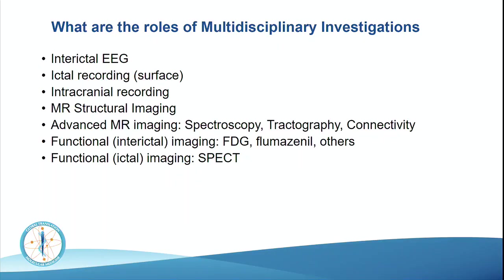Functional imaging — particularly FDG PET — is important. There are other ligands used in PET imaging, particularly flumazenil, though these have not become standard in many centres. SPECT imaging is something we rely on very heavily. ICTAL SPECT is valuable but logistically demanding — patients need to be injected with the radioisotope on the ward at the time of the seizure, and timing must be accurately measured. This requires teamwork between nurses, doctors in the epilepsy ward, and the nuclear medicine team. In institutions where that is well set up, it works beautifully.